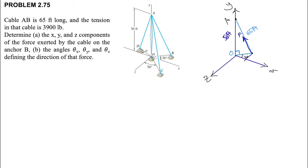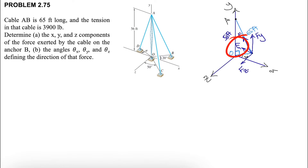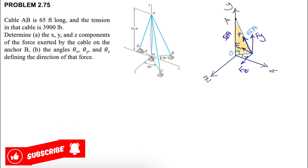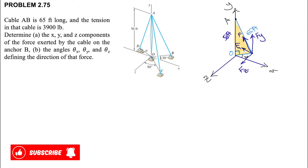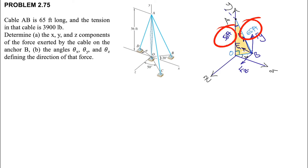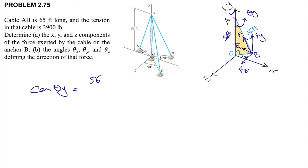We have the tension — let's call it F — and we need to find the components of this force. Fz will be this force, Fx will be parallel to the x-axis, and Fy will be parallel to the y-axis. Looking at the right triangle highlighted in yellow, we have two dimensions: from O to A is 56 feet, and cable AB is 65 feet. This angle is theta_y, the angle that force F makes with the y-axis.